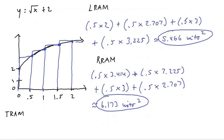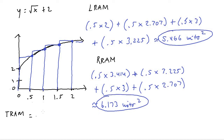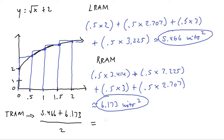TRAM is by far the easiest to calculate — all you do is take your LRAM, add your RRAM, and divide by two to find the average. So (5.466 plus 6.173) divided by 2 gives a TRAM of approximately 5.820 units squared.